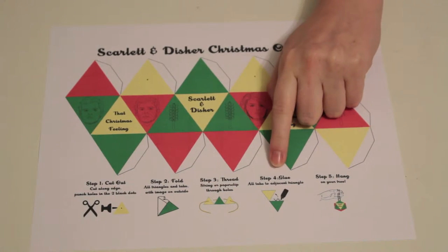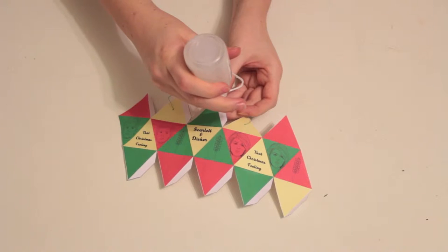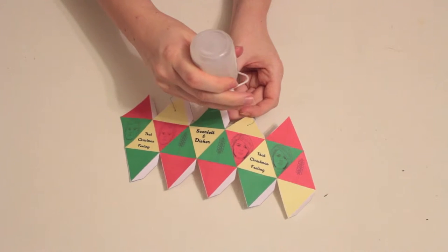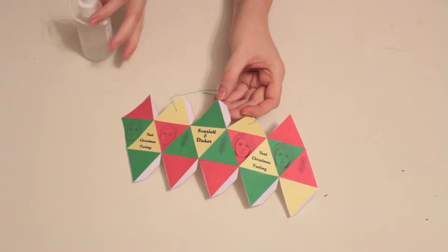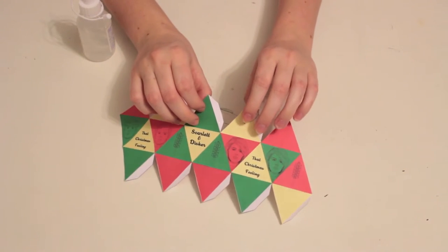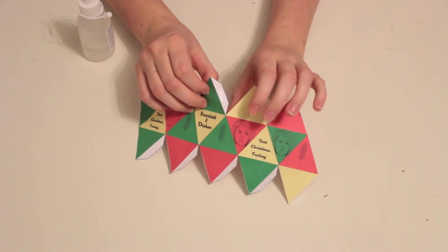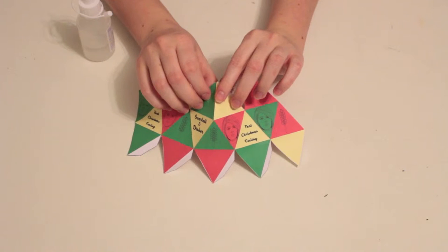Step 4: Glue. Glue each of the white tabs to the underside of the neighboring triangle. This will begin to form the paper into the shape of an ornament. We recommend gluing the upper sections together, then the lower.